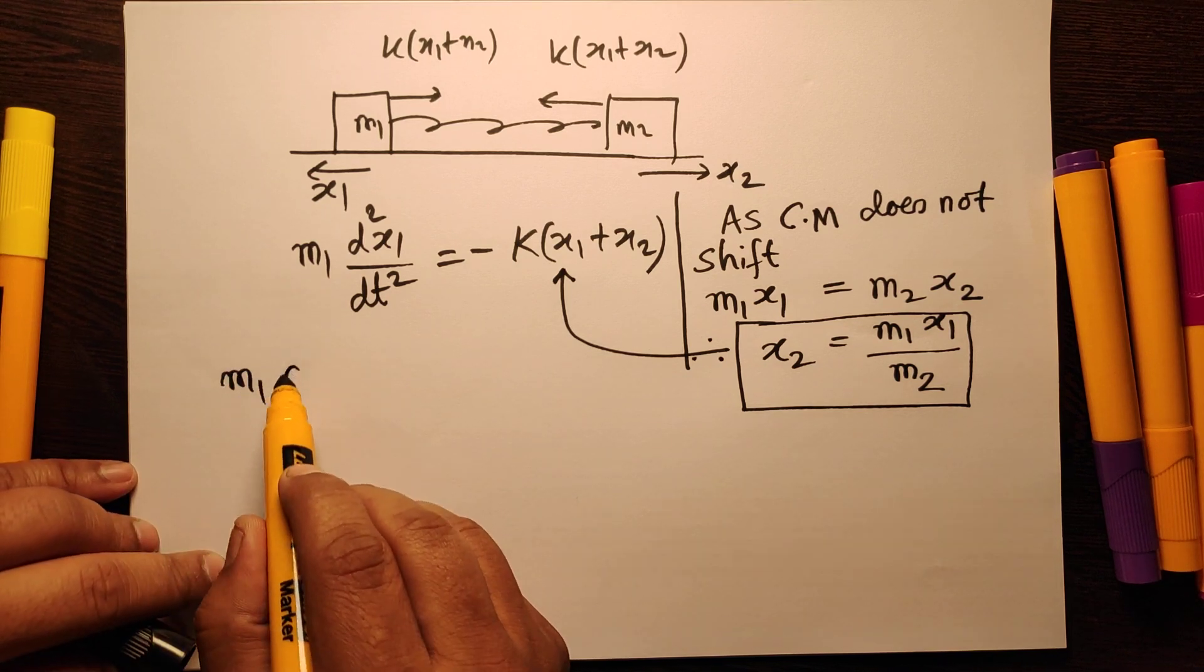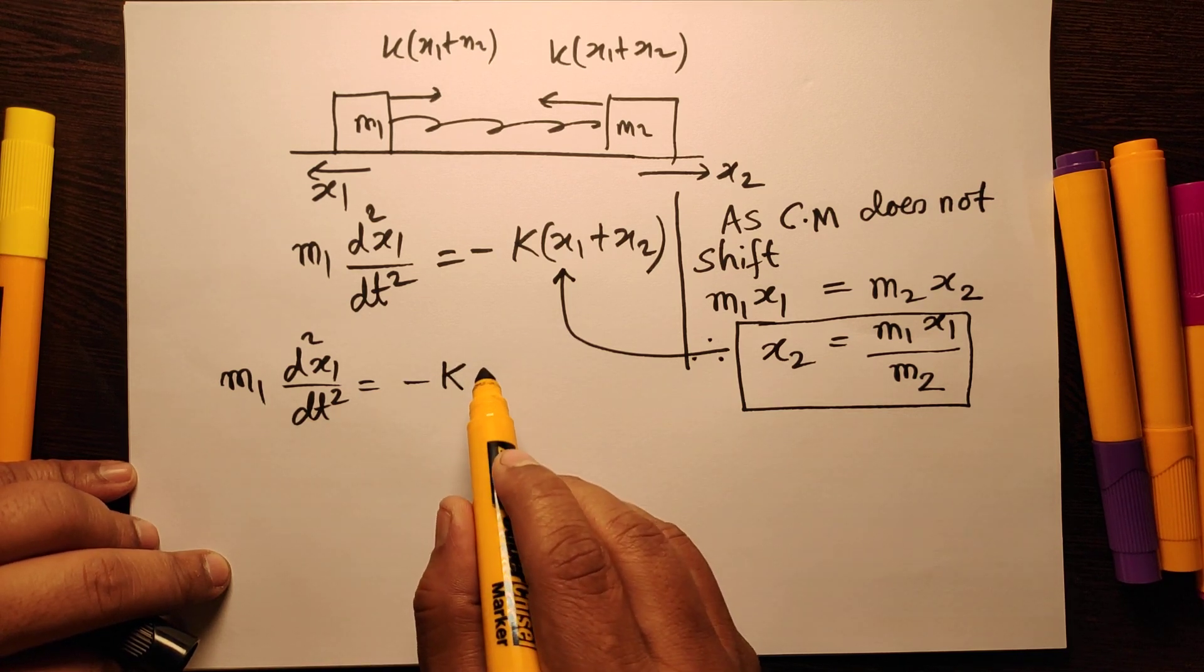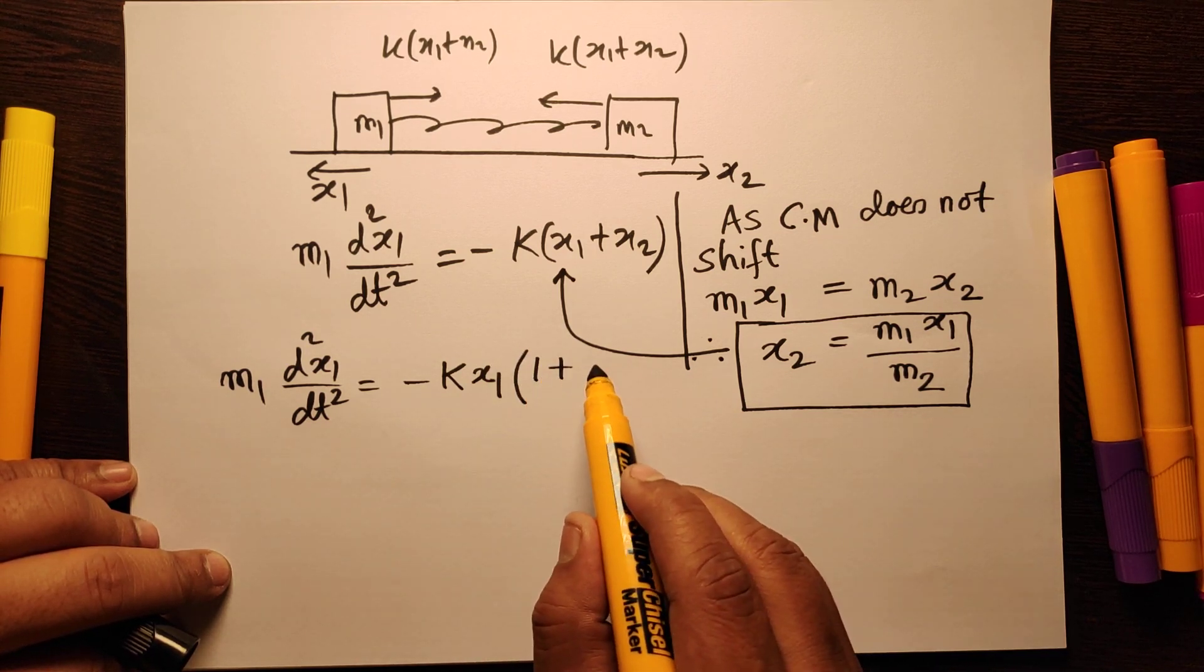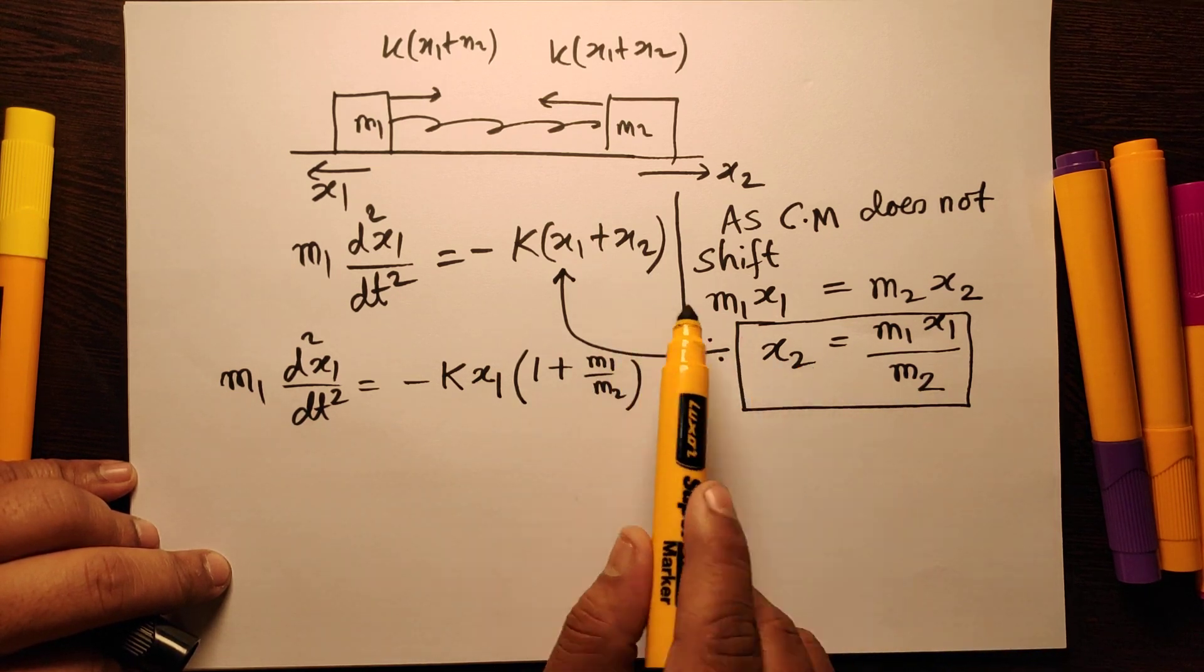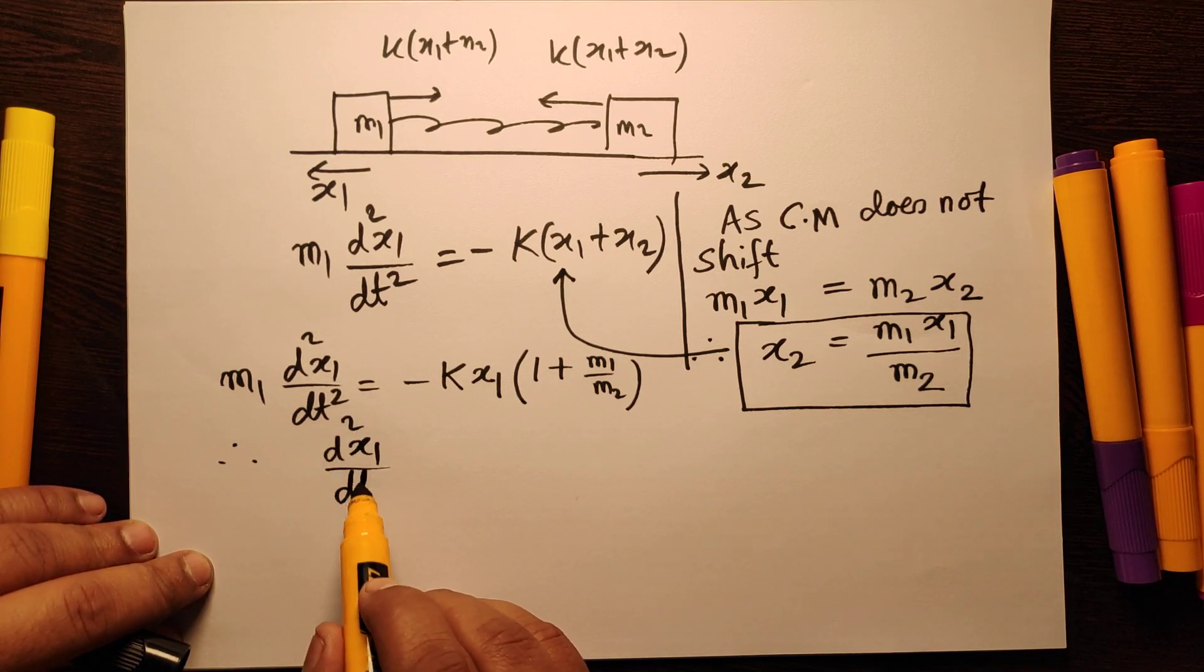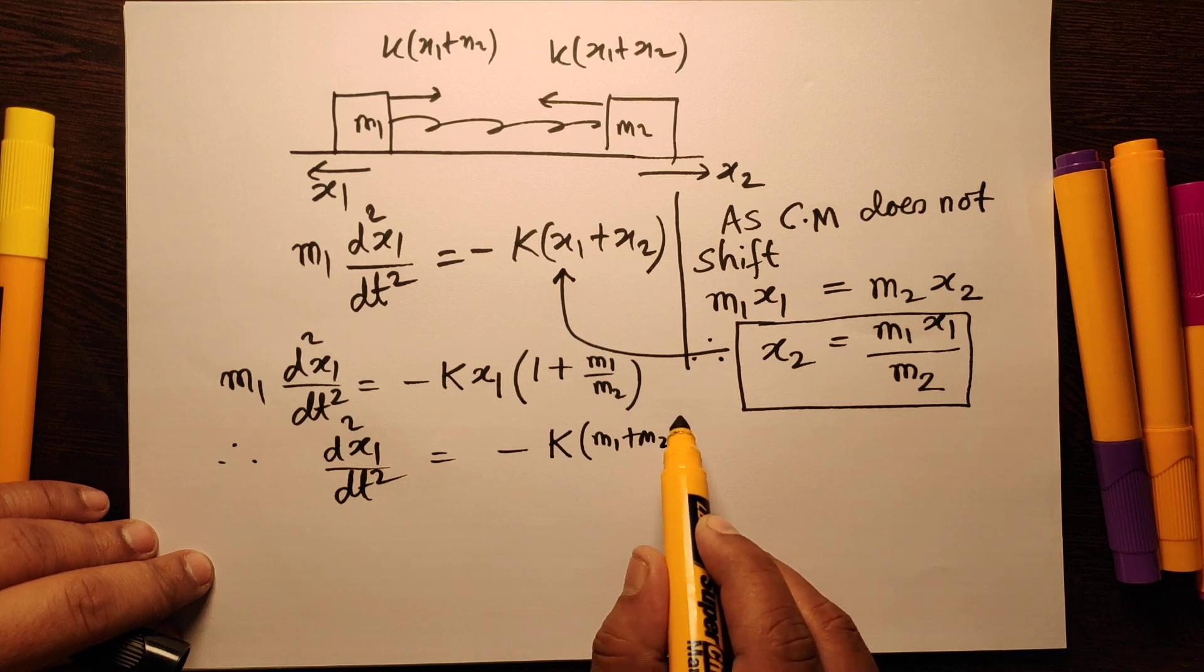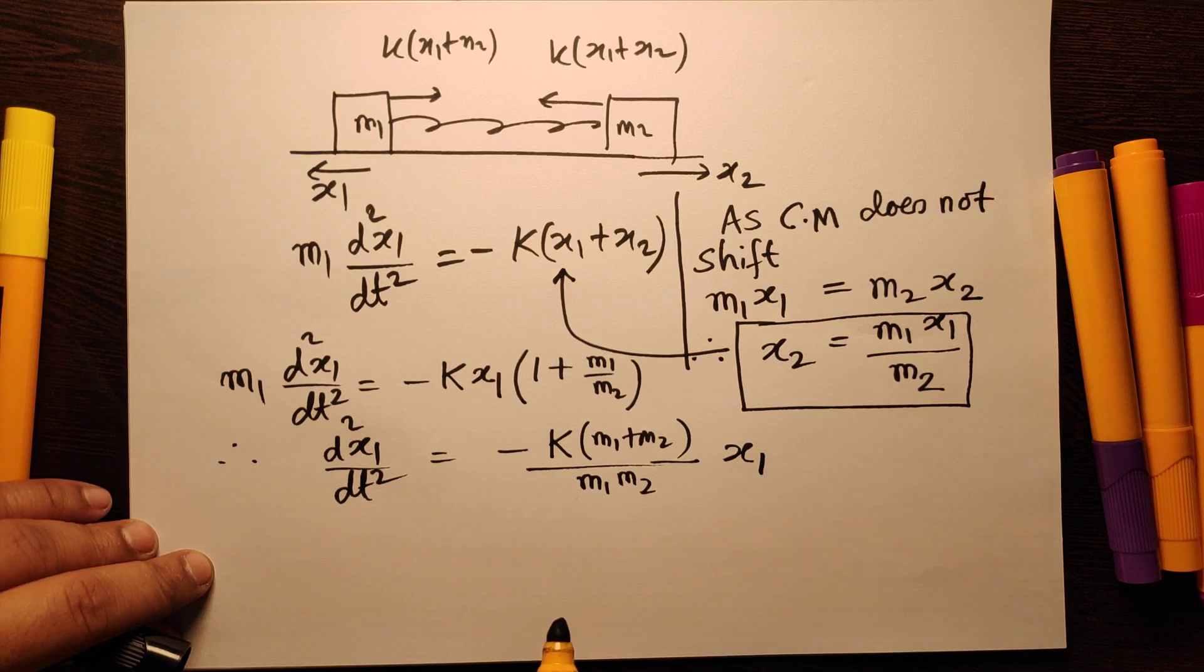I get m1 d²x1/dt² equal to minus k times x1 multiplied by (1 plus m1/m2). If you substitute x2 from this expression here, you get d²x1/dt² equal to minus k times (m1 plus m2)/(m1·m2) multiplied by x1.